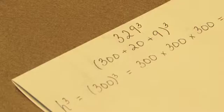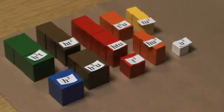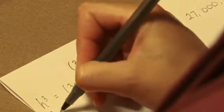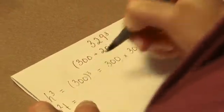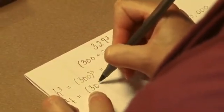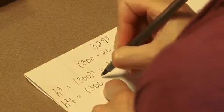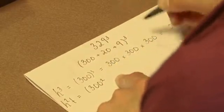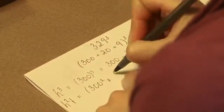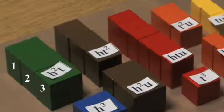The next group that we'll work with is 100 squared times 10. So we have h squared t, and that would be 300 squared times 20. And we have 1, 2, 3 of those.